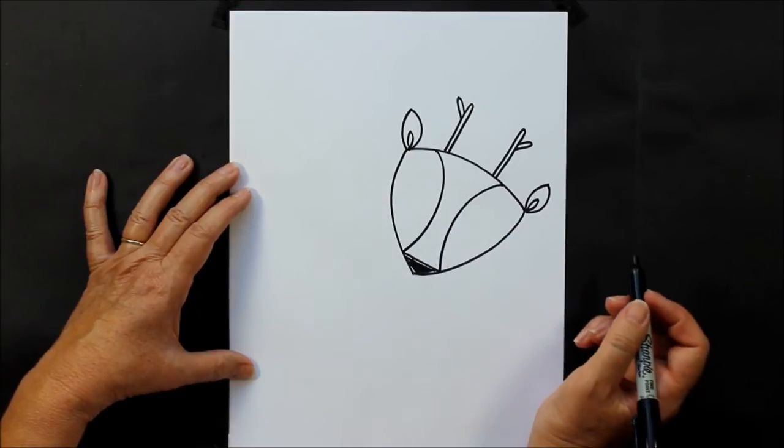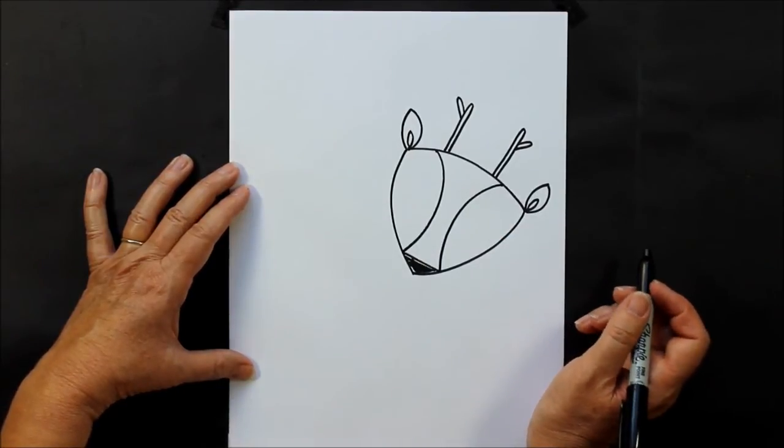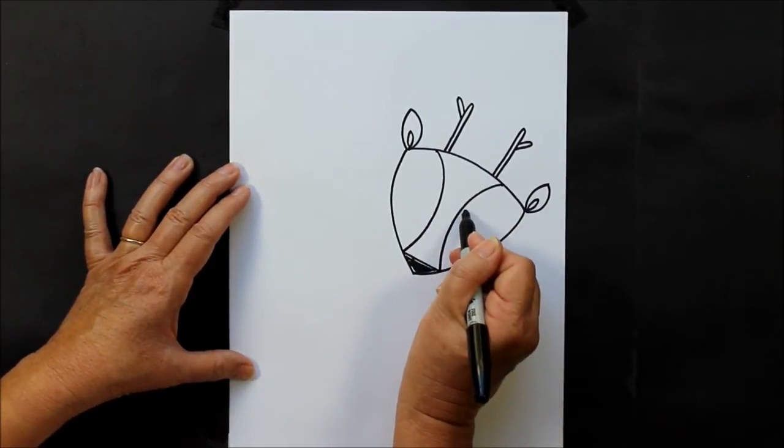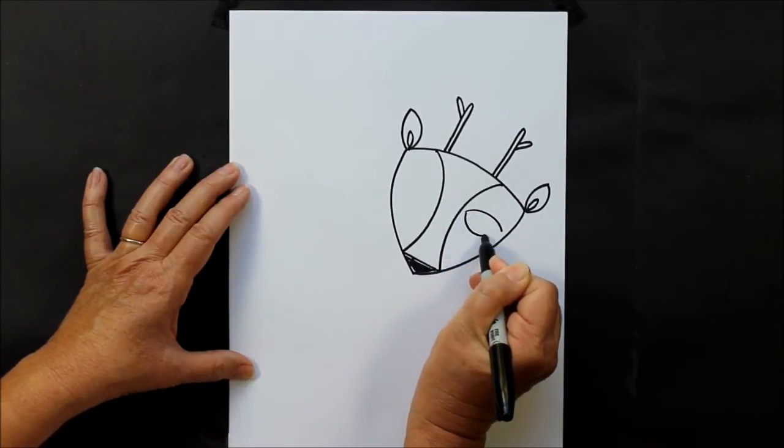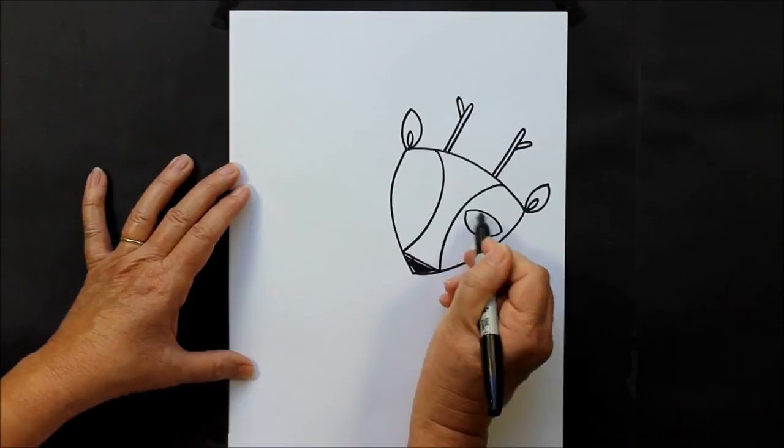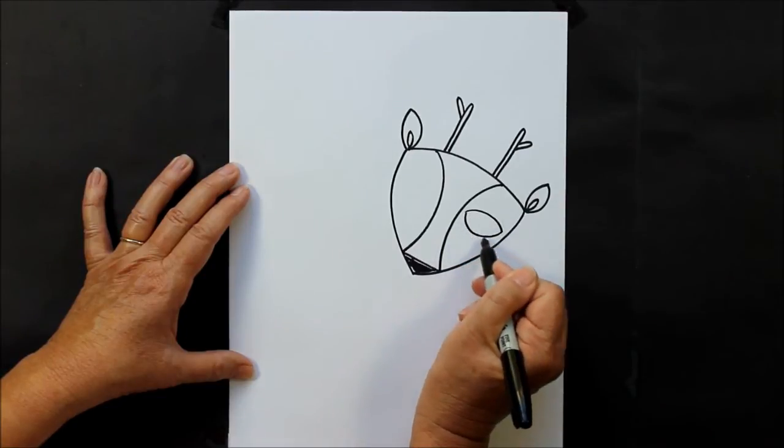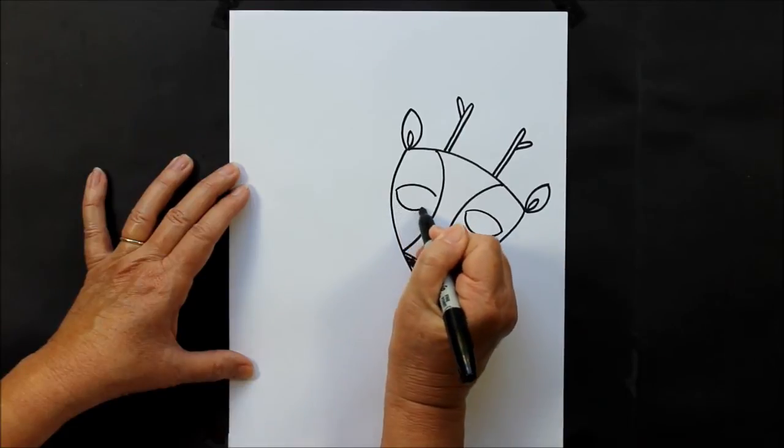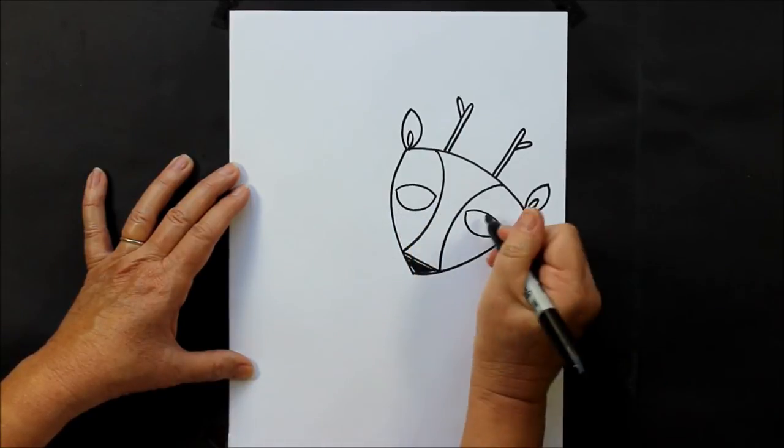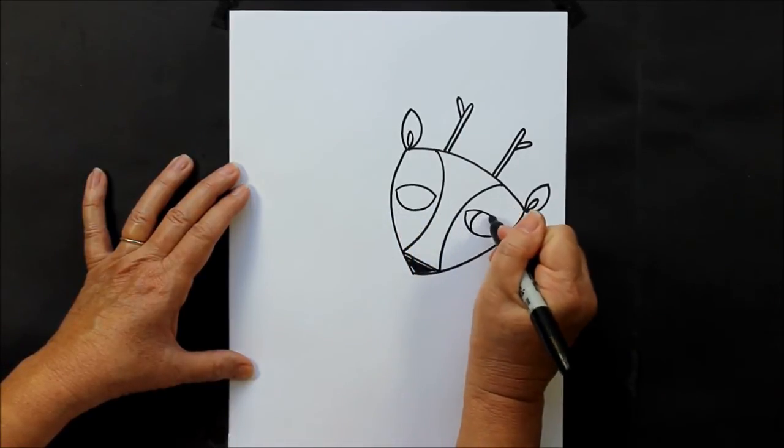Now for this deer I'm going to make her eyes a different shape than I normally do. These eyes are going to be more almond shaped, so it's a curved line across and then underneath close up with another curved line. Inside these lines I'm going to make more curved lines going the other way.